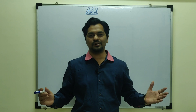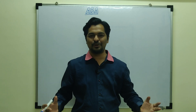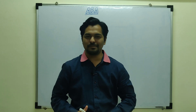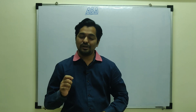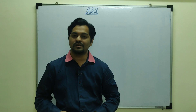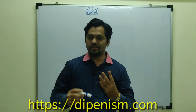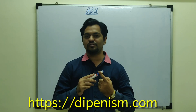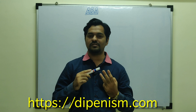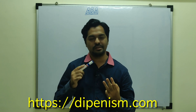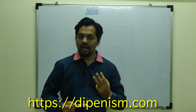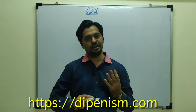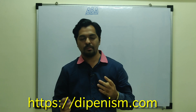Hello future doctors, welcome to Dipenism. I'm Dr. Dipen Shah. So far we have discussed four major plant hormones — auxins, gibberellins, and cytokinins are plant growth promoters, whereas ethylene was largely an inhibitory hormone.